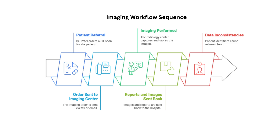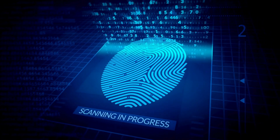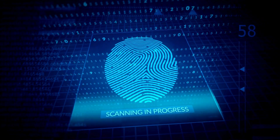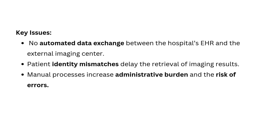The reports - and sometimes even the image files themselves - would be physically delivered on CDs, sometimes printed on paper or sent as email attachments. Someone at CityCare would then have to manually take that information and upload it to the patient's record - a very manual process, prone to errors and delays. Another big issue was patient identification: CityCare might have one ID for a patient while the imaging center has a different one, creating huge problems when trying to match images to the right patient, leading to mismatches and duplicate tests.